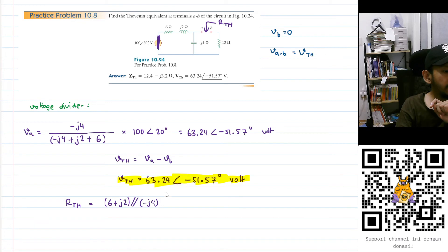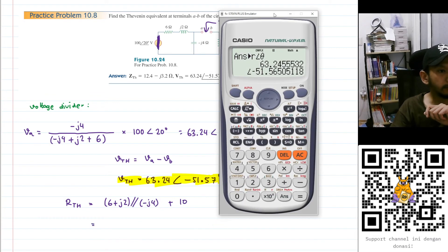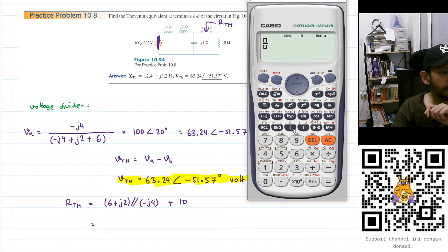But then that will be in series with 10. Now let's just calculate that. For that parallel part I will have 6 plus 2i multiplied by minus 4i, divided by 6 plus 2i minus 4i, and then plus 10.